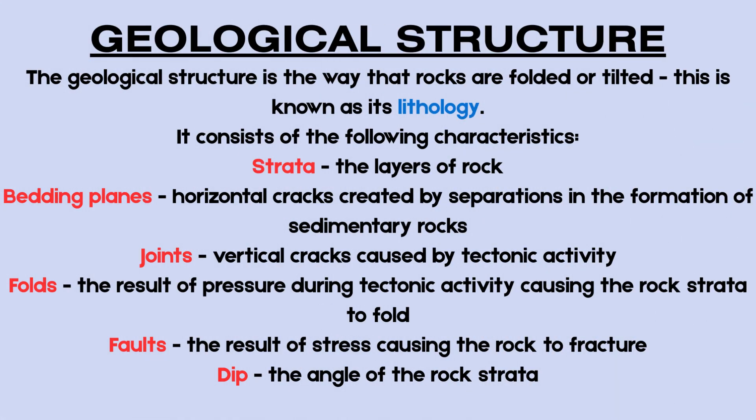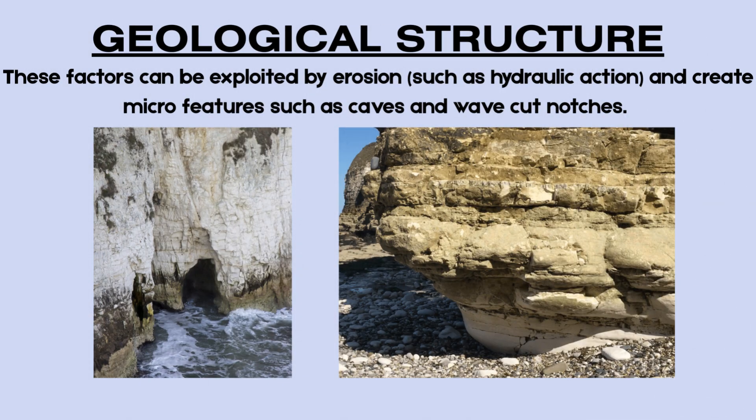Geological structure is key to understanding coastal landscapes. The geological structure is the way that rocks are folded or tilted. There are some key definitions to learn. Strata is the layers of rock. Bedding planes are horizontal cracks created by separations in the formation of sedimentary rocks. Joints are vertical cracks caused by tectonic activity. Folds are the result of pressure during tectonic activity causing the rock strata to fold. Faults are the result of stress causing the rock to fracture. And the dip is the angle of the rock strata. These features can be exploited by erosional processes to create microfeatures such as caves and wave-cut notches, as shown in these photos.